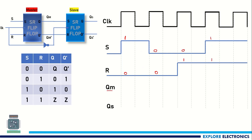QM is the output of the master and QS is the output of the slave. Remember, the master will operate with the positive edge of the clock and we need to observe the output of the slave at the negative edge of the clock. I am taking the main clock as reference, so whenever the negative edge of the clock comes, we consider the slave output.